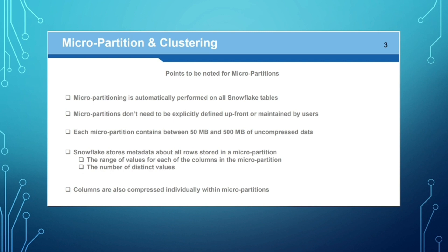Each micro partition holds 50 MB to 500 MB of uncompressed data. In a real-time scenario, the data is compressed, so each partition is actually less than 50 MB as compressed data. All rows are stored in the micro partition, and the metadata stores the range of values, number of distinct values, and minimum and maximum values.